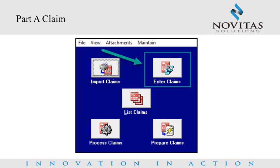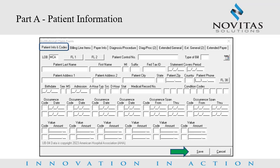After selecting the applicable Claim Processing icon, the user clicks the Enter Claims tile to open the claim form. Now let's review entering claim information, starting with Part A. The user starts by completing all required and necessary fields on the Patient Info and Codes tab. Remember that clicking Save on any screen will show required fields with a flashing notification, and pressing Escape will disable the flashing notifications.